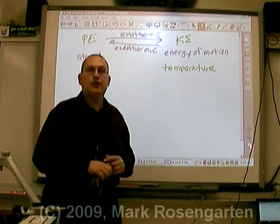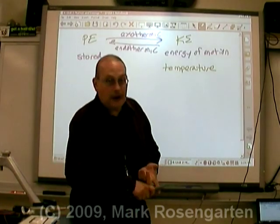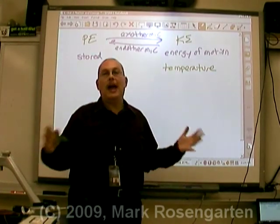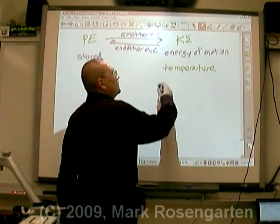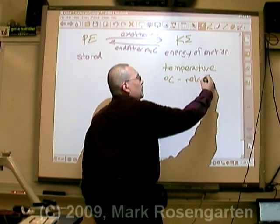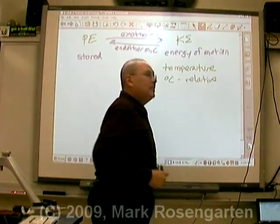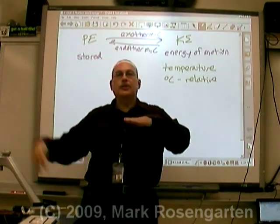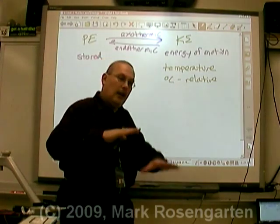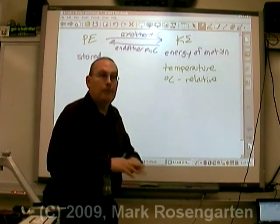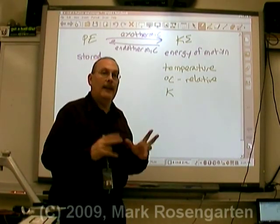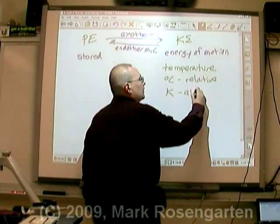Temperature is measured using several different scales. You're probably familiar with Fahrenheit; there's also the Rankine scale, which is the Fahrenheit scale dropped down to absolute zero. There's the Celsius scale, which is a relative scale — useful for finding how much temperature changed. But in chemistry, the absolute scale is more important. We use the Kelvin scale — notice there are no degrees — the Kelvin scale is an absolute scale.